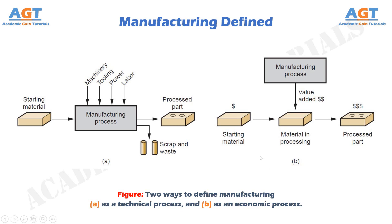The words manufacturing and production are often used interchangeably, but the term production might have a broader meaning than manufacturing. For example, one might speak of crude oil production, but the phrase crude oil manufacturing seems out of place. Yet when used in the context of products such as metal parts or automobiles, either word seems appropriate. We have studied how we can define manufacturing from both technological and economical points of view.